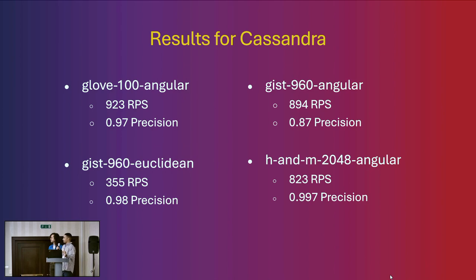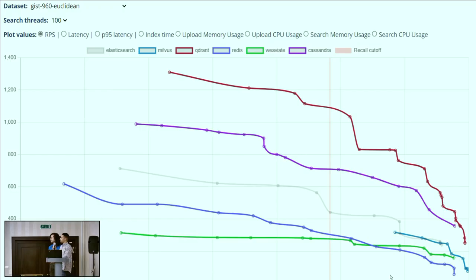As you can see, we can maintain pretty high precision with good throughput. Our throughput seemingly lowers the more dimensionality the data sets have.